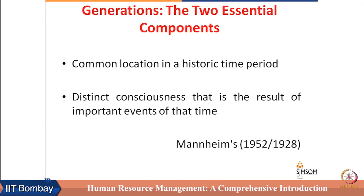What do we mean by generation? The basic definition of generation involves two essential components. Number one, it has a common location in a historic time period — they are related to a particular time period. Second, they have a distinct consciousness as a result of important events during that time period. These two factors shape generations.